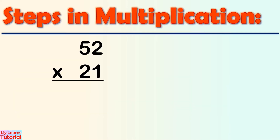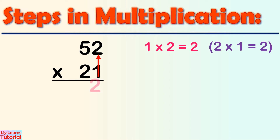Step 1: Multiply the 1s digit of the multiplier by the 1s digit of the multiplicand. That is, 1 times 2 equals 2.